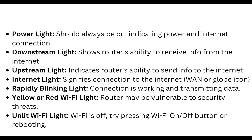A rapidly blinking light means the connection is working and transmitting data. A yellow Wi-Fi light may indicate the router is vulnerable to a security threat. If the Wi-Fi light is unlit, Wi-Fi is off — try pressing the Wi-Fi on or off button or rebooting.